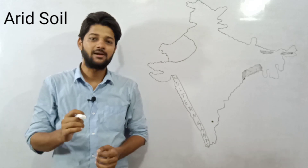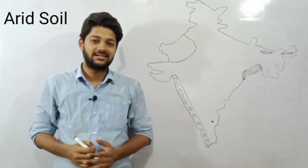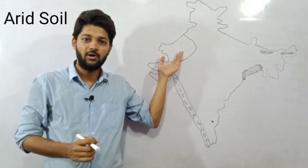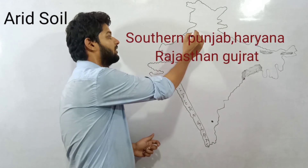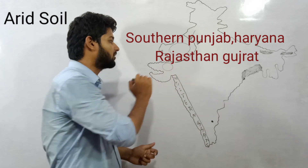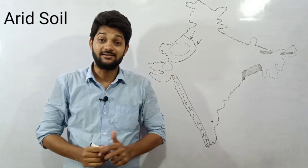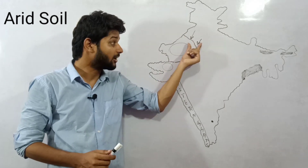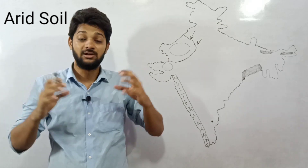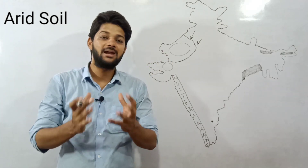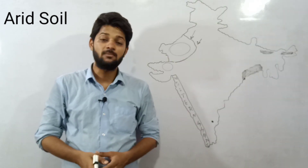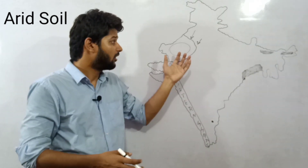The next type of soil we have to discuss is arid soil or desert soil. Arid soil or desert soil has been developed in the western part of India. Some of the states are Southern Punjab, Southern Haryana, full Rajasthan, and some part of Gujarat. In Rajasthan, you can almost say there is arid or desert soil, and partially in Gujarat.